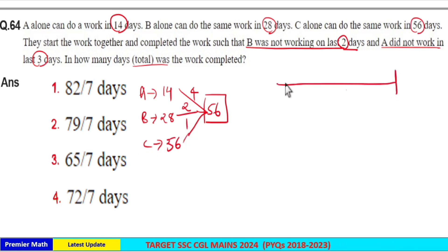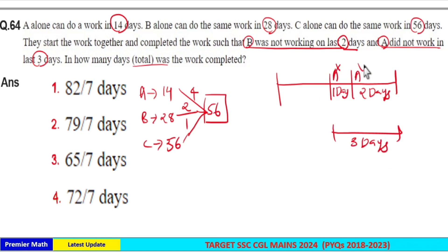Here C alone worked for all the days because B was not working on last 2 days. So for the last 2 days B was not working and A did not work in last 3 days. A did not work for the last 3 days and in last 2 days B did not work which means in last 2 days C only worked.